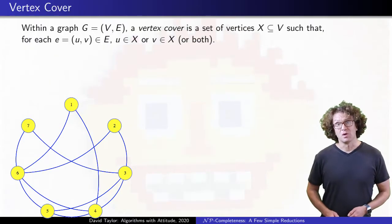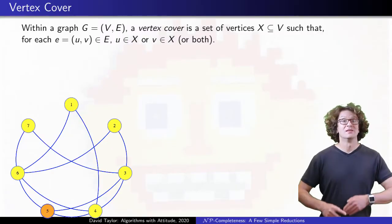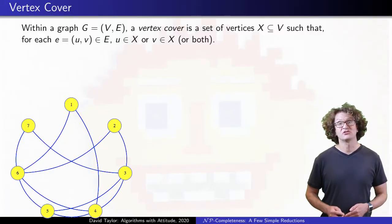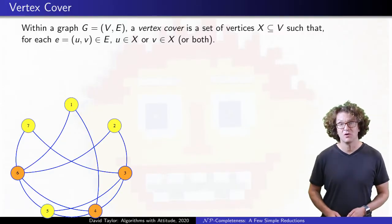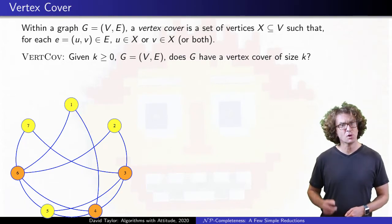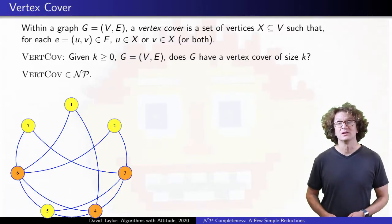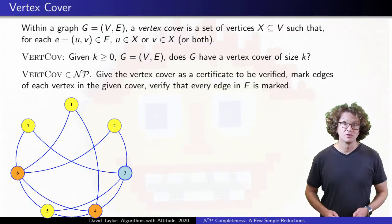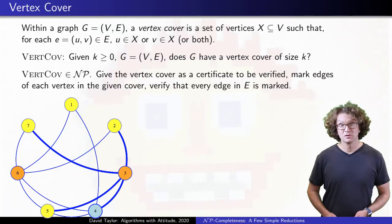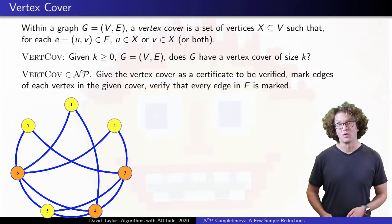We are going to use a few different problems. Vertex cover is up next. In a graph, a vertex covers the edges that it is a part of. A vertex cover is a set of vertices that cover all of the edges in a graph. The vertex cover problem asks if a graph has a vertex cover of a given size. Notice it is harder to find a small vertex cover, while it is harder to find large cliques and independent sets. But still, vertex cover is in NP. If somebody gives you a cover as a certificate, in polynomial time we can mark edges for each vertex in that cover, and then verify if all edges from the graph are marked.